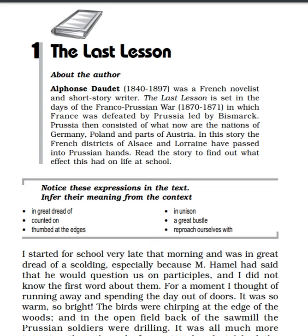The story's background is that France and Prussia had a war in 1870-71. Prussia, which included Germany, Poland, and parts of Austria, was a big and powerful nation, and that's why France was defeated in the war. As a result, two districts of France — Alsace and Lorraine — passed into the hands of Germany, and because they were now under Germany, the German language was imposed in those areas.